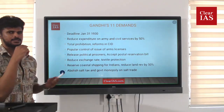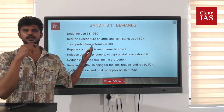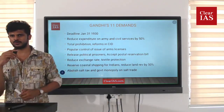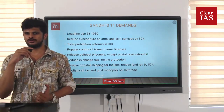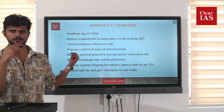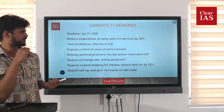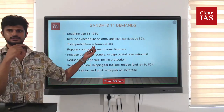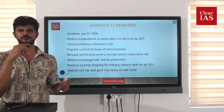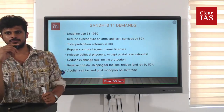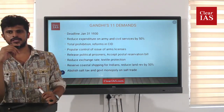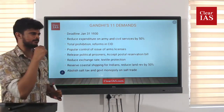He also demanded total prohibition — that is, a ban on alcohol. Another demand was reforms in the CID department, so CID reforms were part of the 11 demands as well.